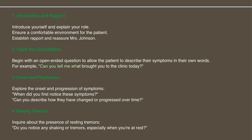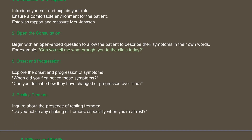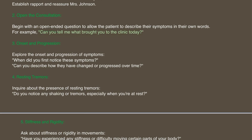Then we're going to ask about the onset and progression of symptoms. The patient will give you some history — maybe they're disturbed over the tremors or whatever it is — then go on to ask: 'When did you first notice the symptoms and can you describe how they have changed or progressed over time?' Remember to rehearse these lines and keep it as natural as possible so the flow of the consultation is good.